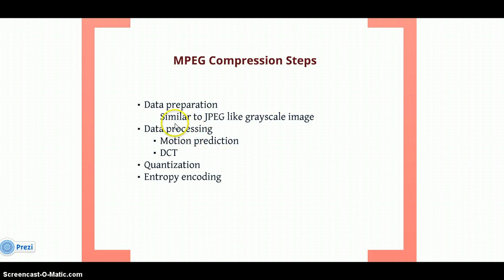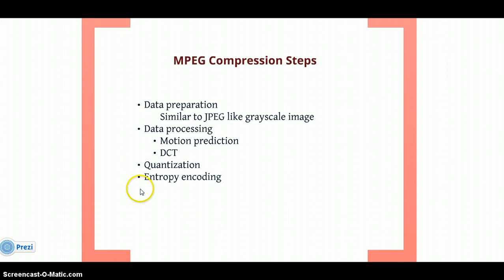Data preparation is similar to JPEG — like we have an RGB image, we will convert it into a grayscale image. Then data processing. Data processing has two steps: motion prediction and DCT. Motion prediction I have described, and then come to Discrete Cosine Transform.